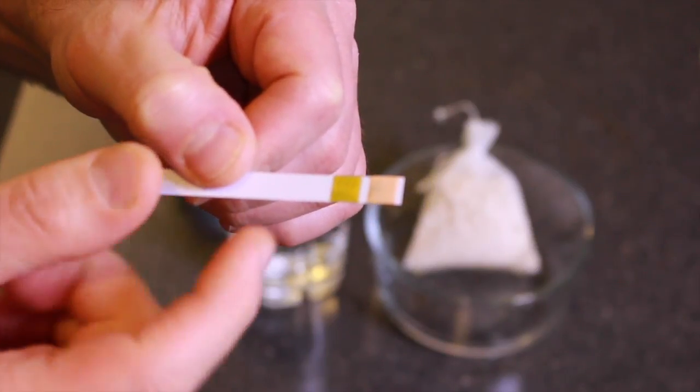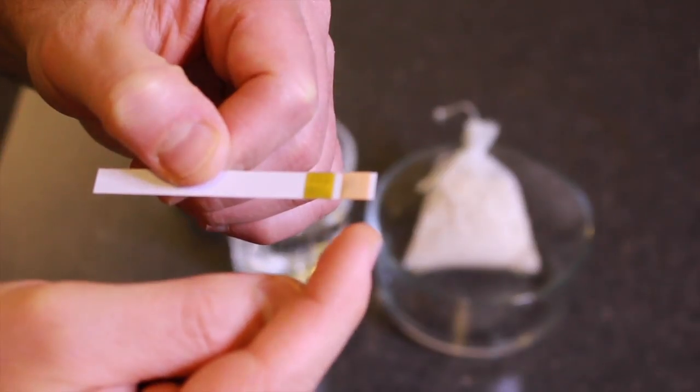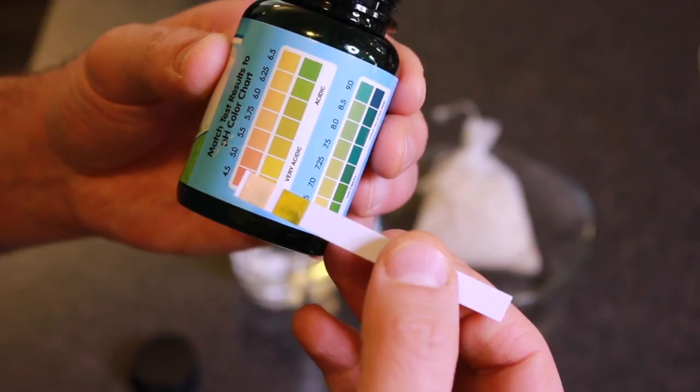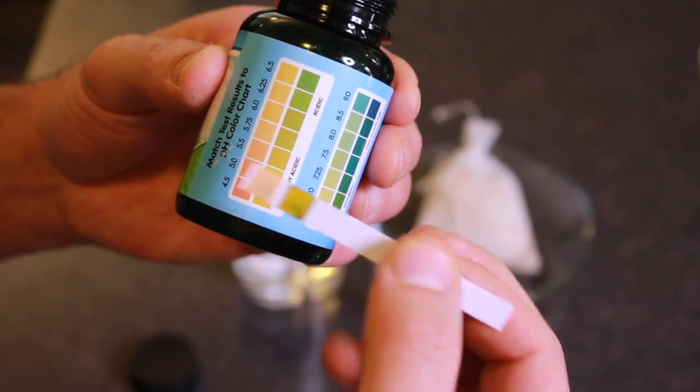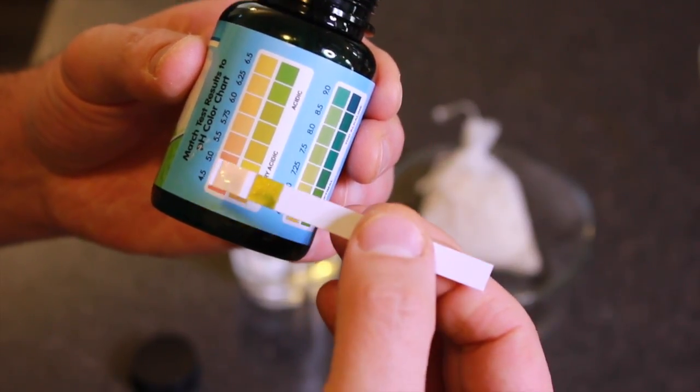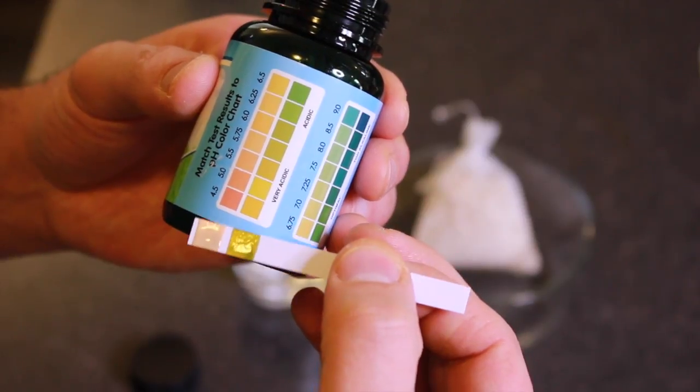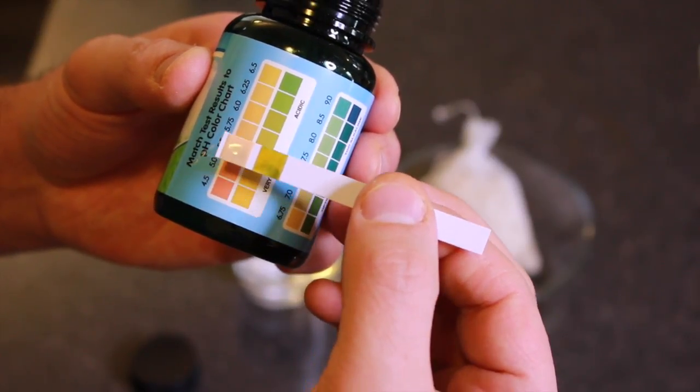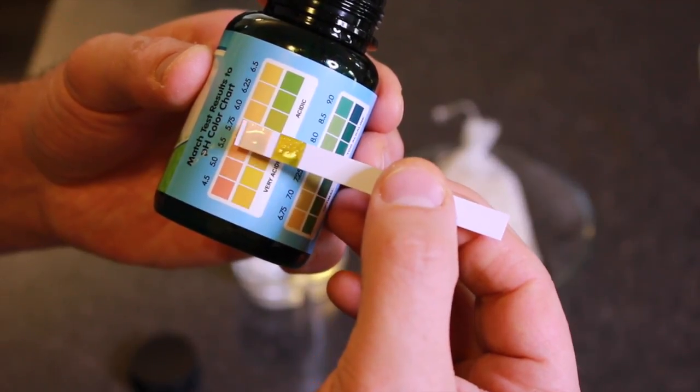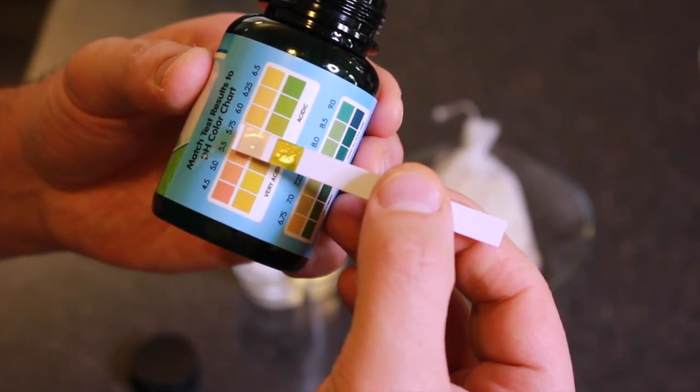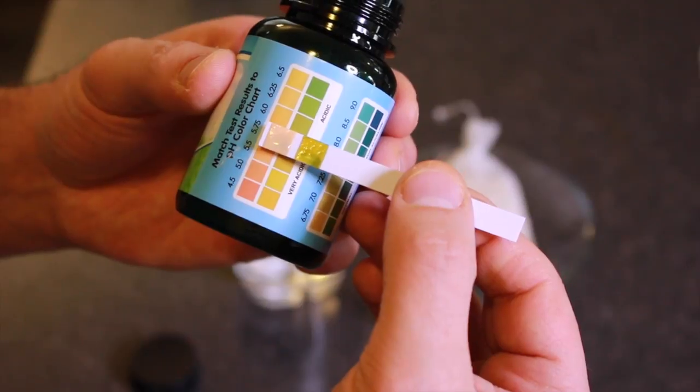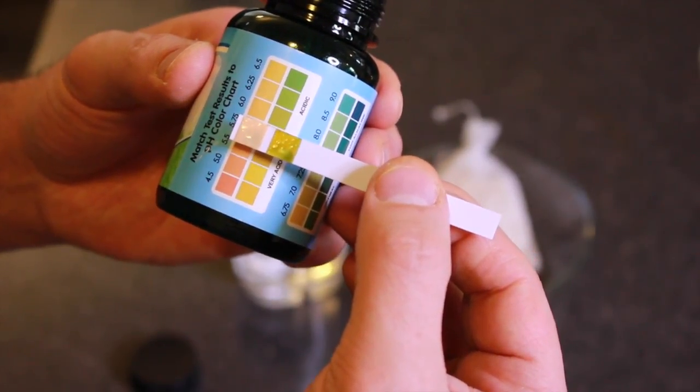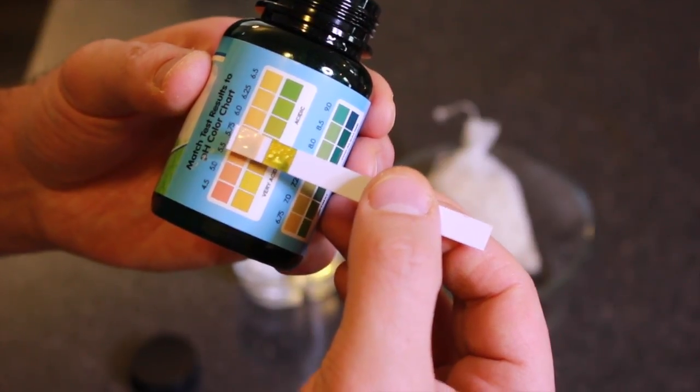So as you can see the sensitive square areas of the pH strips are turning and changing colors. So what we need to do is to simply put our pH strip right on this chart and figure out where we are. I would say we're very close to 5.75. So without putting the precious prills in the water, we're at 5.75.